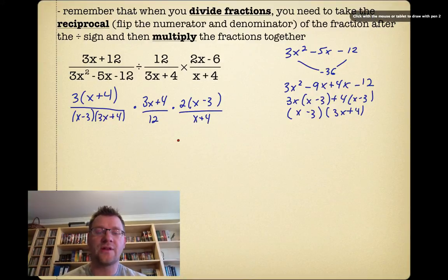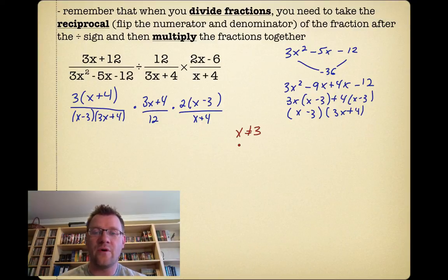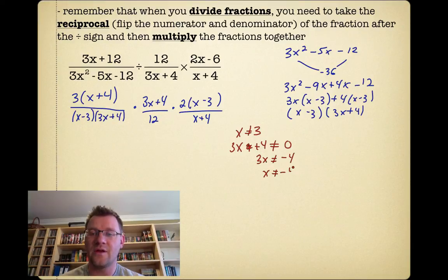Now we have to make sure to find our non-permissible values. We go through all the factors on the bottom wherever we see an x. (x - 3) means x cannot equal 3. (3x + 4) means 3x + 4 cannot equal 0, which means 3x cannot equal -4, so x cannot equal -4/3. And (x + 4) means x can't equal -4.